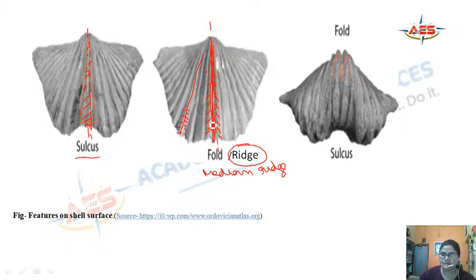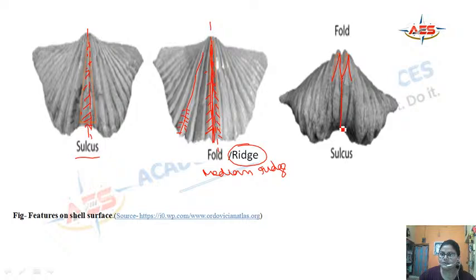We have the median sulcus (depression) and the median ridge (elevation). Due to the elevated region, folds or ridges develop, and due to depression, the sulcus develops.